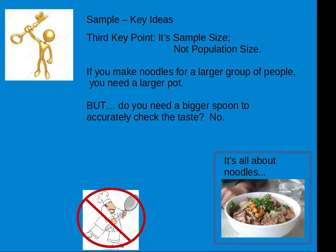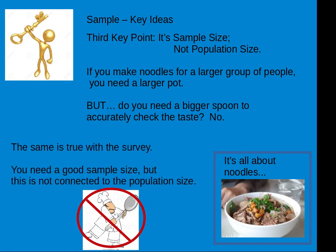The third key idea is about the sample size, not the population size. This is a little bit hard to understand. For example, if you make your pot of noodles for a larger group of people, you need a larger pot. But when you want to test the flavor, do you need a bigger spoon just because it's a bigger pot? No, of course not. So the same is true about taking a survey — you need a good sample size, but the sample size is not related or connected to the population size.